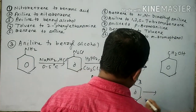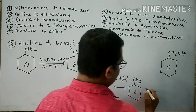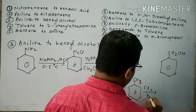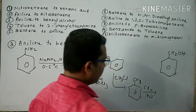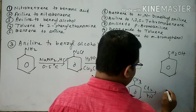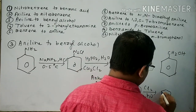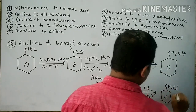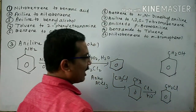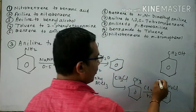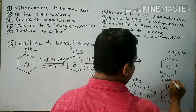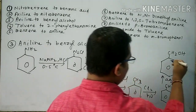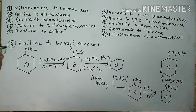Methylbenzene undergoes halogenation in the presence of sunlight (hν), then benzyl chloride is formed. Benzyl chloride undergoes reaction with aqueous KOH, then benzyl alcohol is formed.